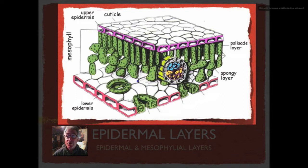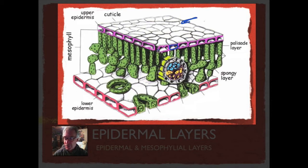Looking at this diagram, the upper portion is called the upper epidermis. It's usually one, possibly two cells thick depending on the plant. It's very highly structured, with lots of cellulose and lignin in it. On dicots you're going to see different kinds of structures at the top and on the bottom.